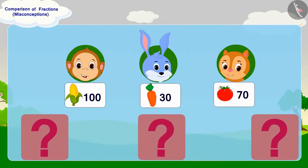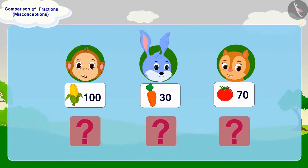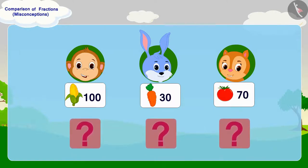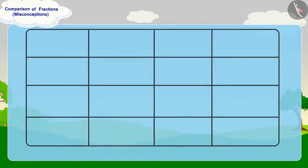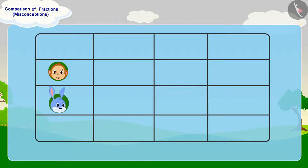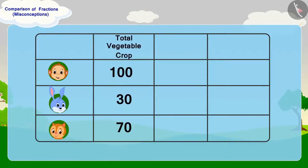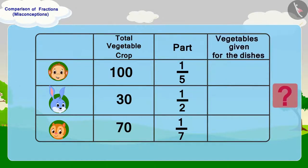So, what shall we do now? To solve the confusion between the three of them, we have to find out the number of vegetables given by each of them. The total quantity and share of vegetables grown in the crops of Babban, Banni, and Chandan is written. Can you find the number of vegetables given by all three from these parts?